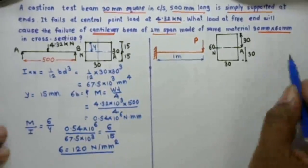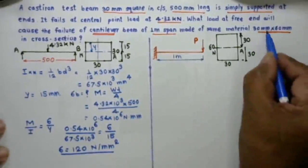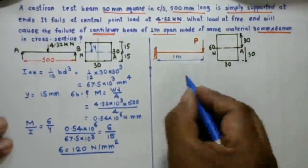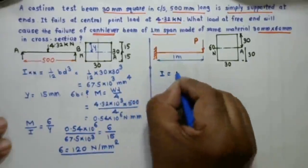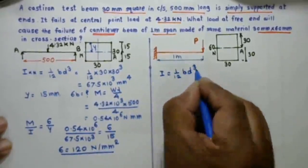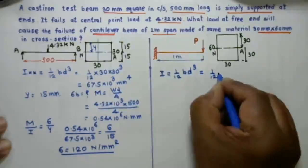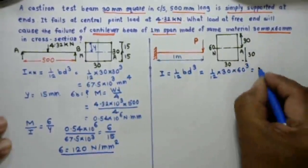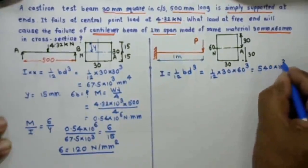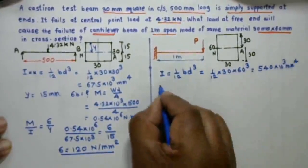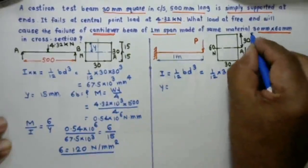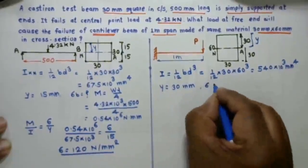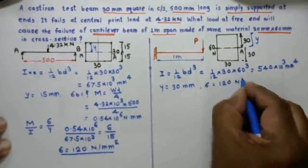In the second case the same material is used but the cross section is different: 30 mm by 60 mm. We calculate the moment of inertia for this rectangular section as I = (1/12)bd³, where b = 30 and d = 60, giving I = 540 × 10³ mm⁴. The distance y from the neutral axis to the outer fiber is 30 mm. We use the same sigma of 120 N/mm² calculated in case one.